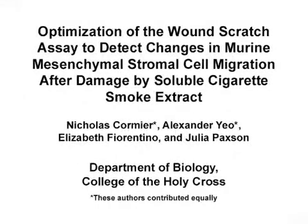The overall goal of this assay is to detect changes in the migratory capacity of lung mesenchymal stromal cells after damage with soluble cigarette smoke extract. This method can be used to answer key questions in the field of lung regenerative biology, including how migratory capacity of lung progenitor cells can be improved to aid in lung repair. The main advantage of this technique is that it has been optimized to provide better quantitative measurements for cell migration, while still remaining economical to perform and easy to customize.